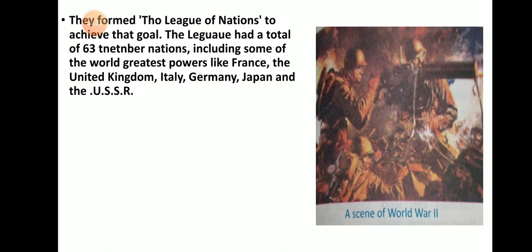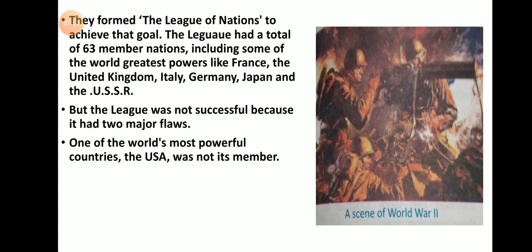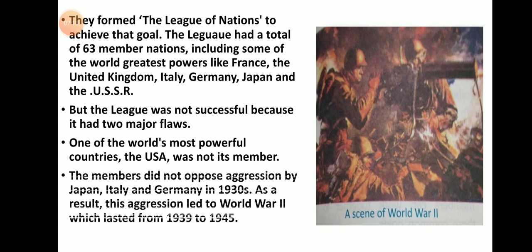So they formed the League of Nations to achieve that goal. The League had a total of 63 member nations, including some of the world's greatest powers like France, the United Kingdom, Italy, Germany, Japan, and the USSR. But the League was not successful because it had two major flaws: one of the world's most powerful countries, the USA, was not its member; and the members did not oppose aggression by Japan, Italy, and Germany in the 1930s. As a result, this aggression led to World War II, which lasted from 1939 to 1945.